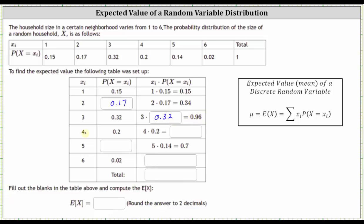For X equals four, we already have the probability X equals four as 0.2. In the third column we have four times 0.2 which is 0.8. Next, when X equals five, we're missing the probability. The probability X equals five from the table is equal to 0.14. In the third column we already have five times 0.14, which is equal to 0.7.